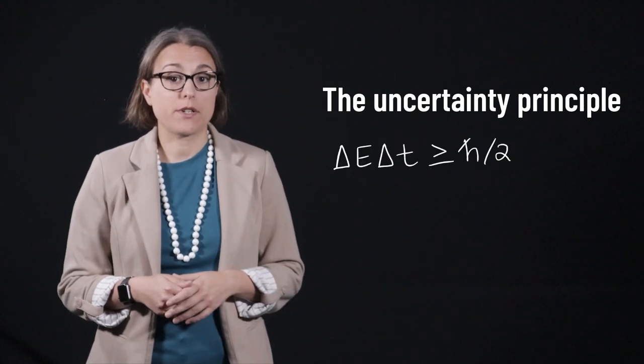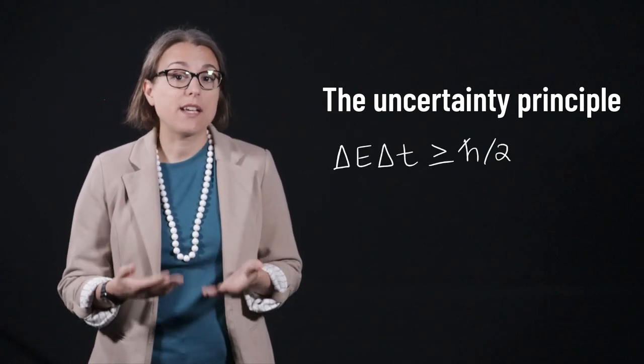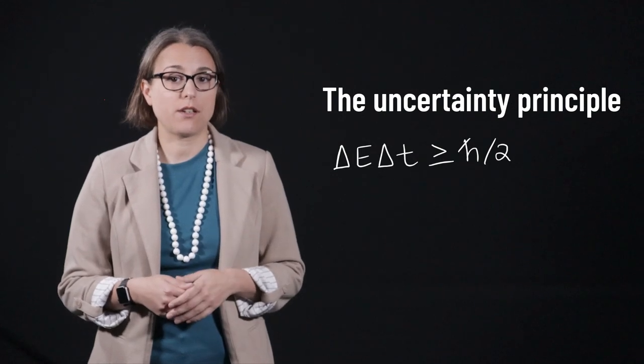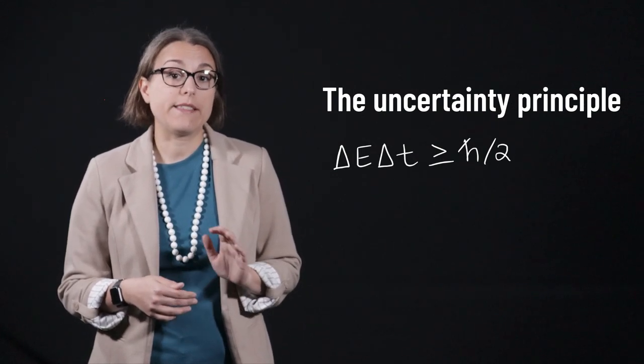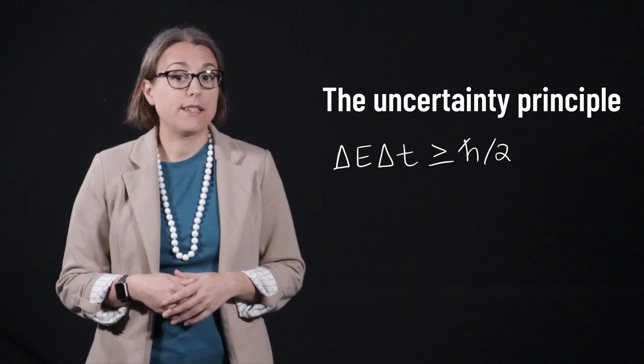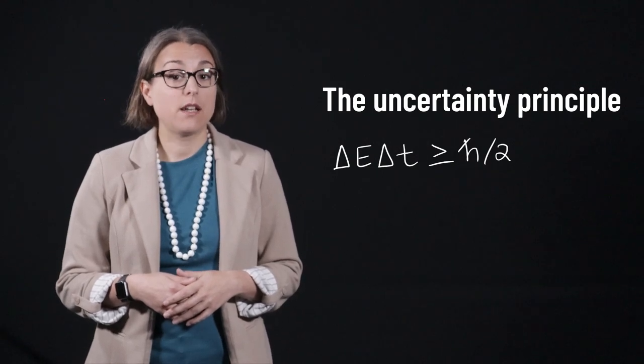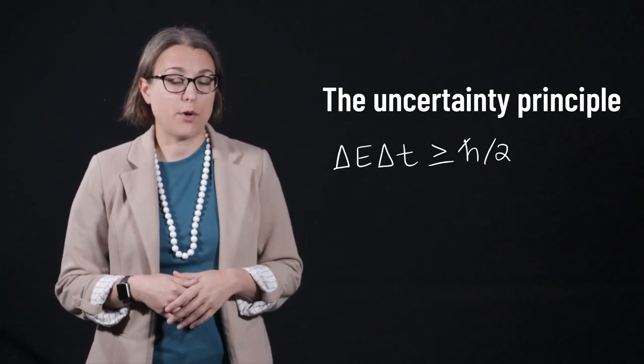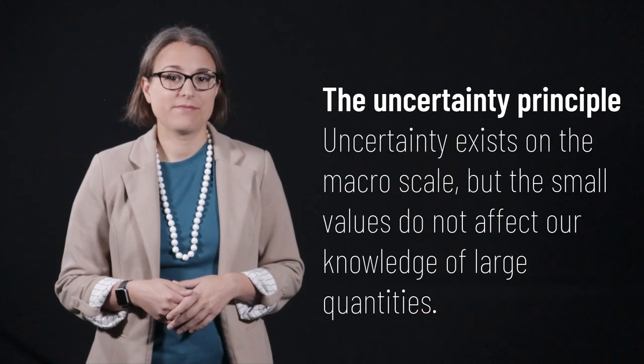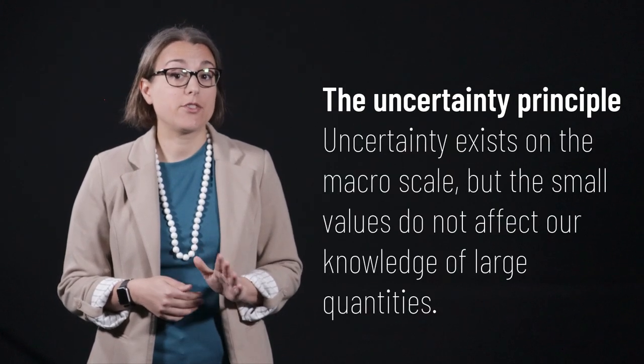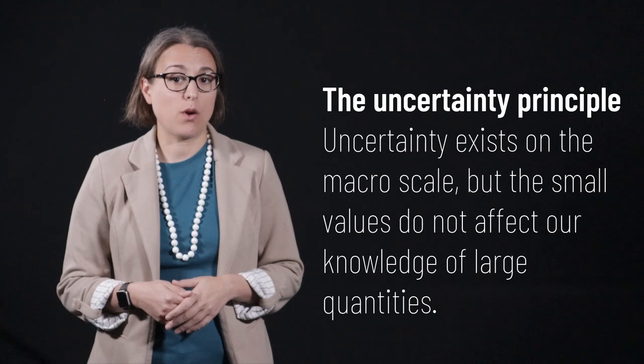Two other properties that are linked in uncertainty are energy and the time at which the object had that energy. We can state uncertainty in these two variables as delta E times delta t is greater than or equal to h-bar divided by 2.